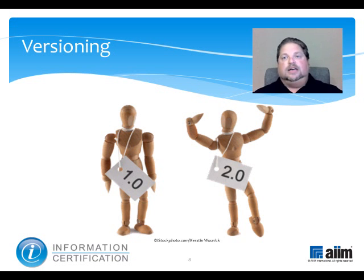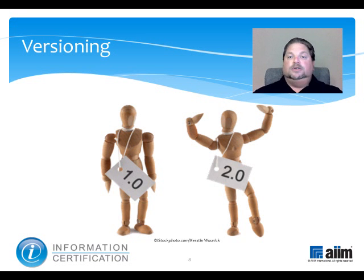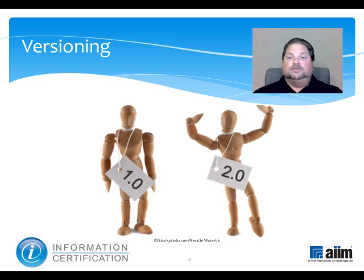Versioning is also commonly used because of the need to track changes made to data, to revert to previous versions if new ones are released prematurely or mistakes are made, or to satisfy audit requirements. For instance, a life insurance carrier may wish to know not only whom a customer named as a beneficiary, but also who was named before that, and when the change was made. Researching this requires that historical information has remained available, as do principles of good data stewardship, governance, and compliance.